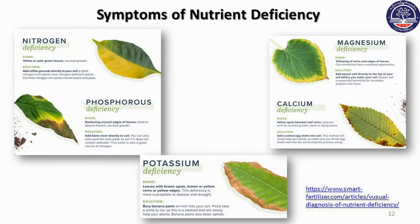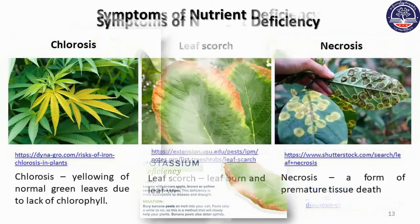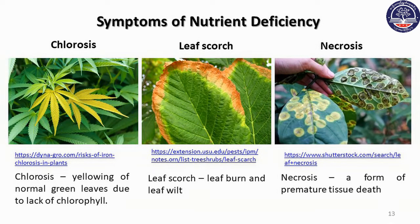Symptoms of nutrient deficiencies: nitrogen deficiency causes yellowing. Phosphorus deficiency affects hydrolysis. Potassium, magnesium, and calcium deficiencies also occur. Chlorosis is yellowing of soft or normal tissue due to lack of chlorophyll.